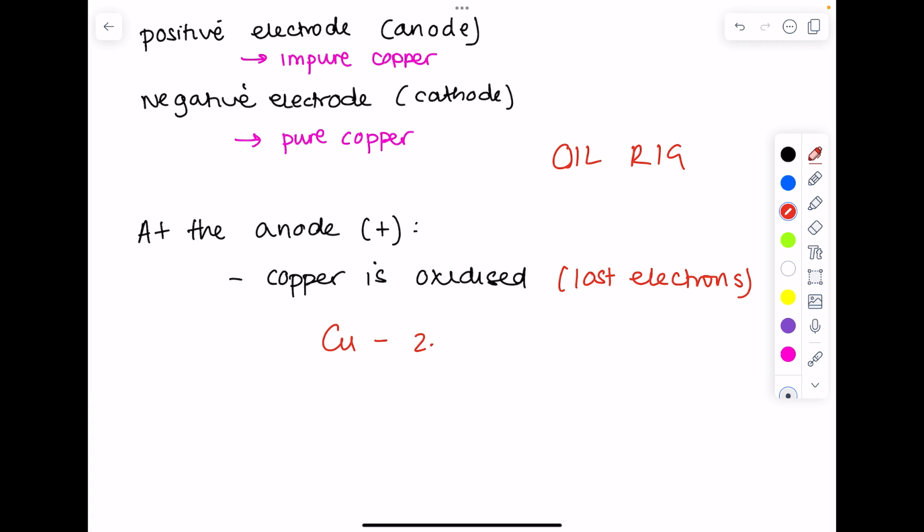So here's our copper. It's lost electrons. Because those electrons are negatively charged, it will have a net positive charge of 2+. You might also have seen that equation written like this, but that is representing oxidation.